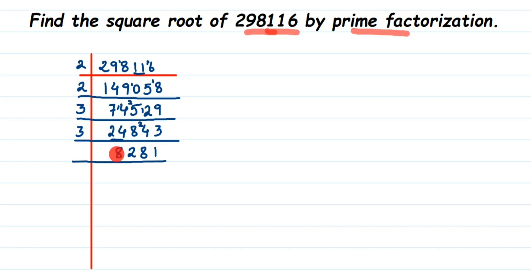If you've learned the divisibility test: add up all the digits — the result should be divisible by 3. So 8 plus 2 is 10, 10 plus 8 is 18, 18 plus 1 is 19. But 19 is not divisible by 3, which means this number is not divisible by 3. Next, 5 — it's not divisible by 5 because the number ends with 1. So the next prime number is 7.